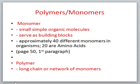Polymers and monomers. Mono means one, so monomer is a single unit. It is a small, simple organic molecule. It's going to serve as the basic building block for larger, more complex organic molecules. And in nature, there are about 40 different monomers that are used to build all these different organic molecules that we see across the whole spectrum of nature.